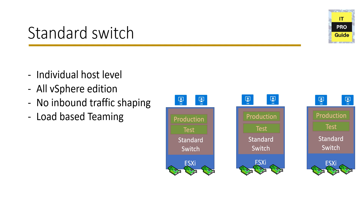With a standard switch, you configure it at the individual host level. That means you log into your ESXi host and configure the standard switch one by one, then configure port groups, then give uplink connectivity, then configure policies for each ESXi host. Standard switch is available by default with all ESXi versions, but some features are limited and not available on the standard switch.